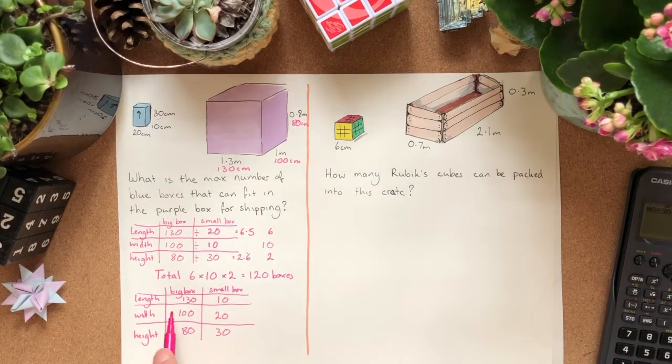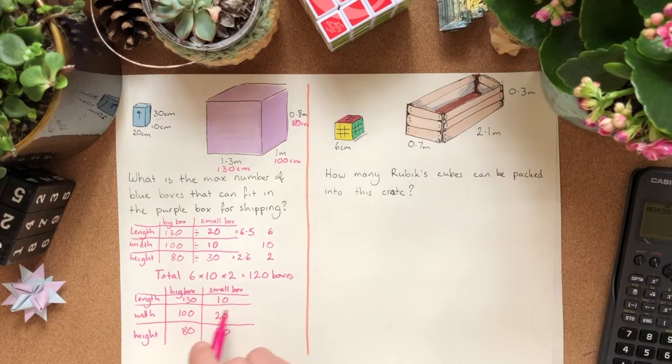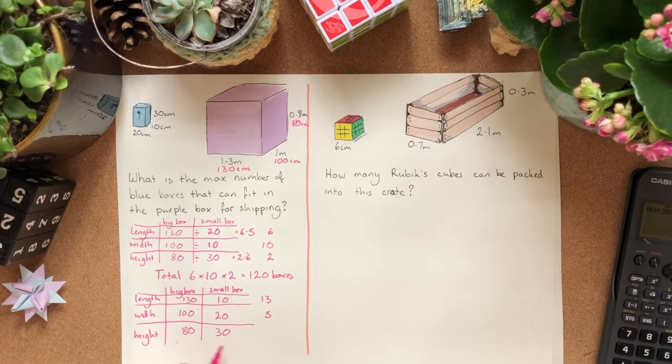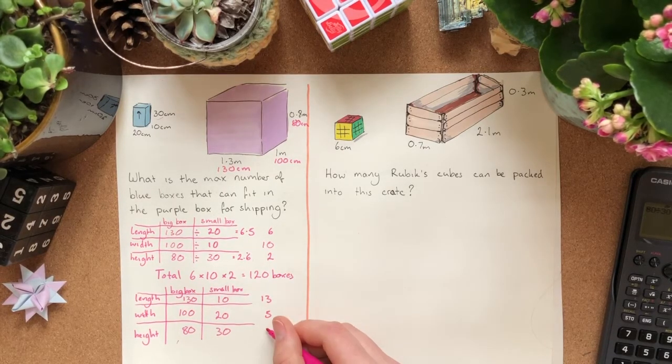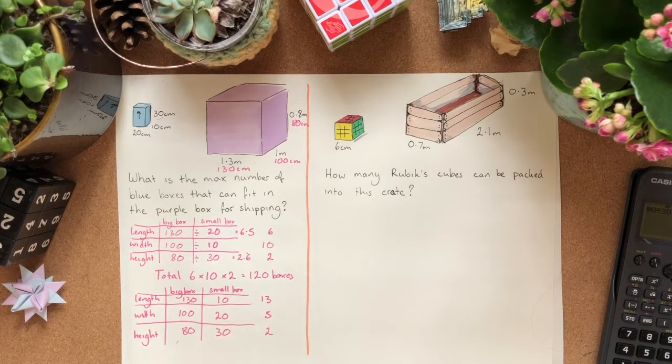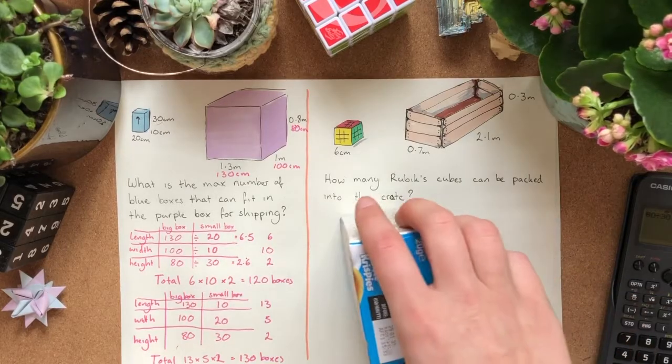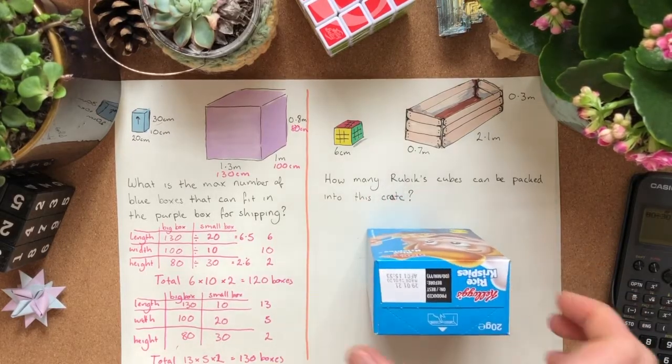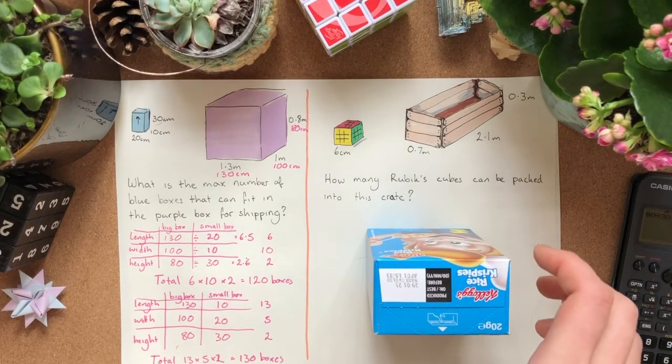Same calculation again. Do the divides to figure out how many small boxes can we get across there. You can do that one in your head. And the height's still going to be the same. Still only 2 layers. So now to find our total, we do length times width times height. Same as the volume of a cuboid. And as if by magic, just by swapping the box from here to here, we can now fit a whole 10 extra boxes in.